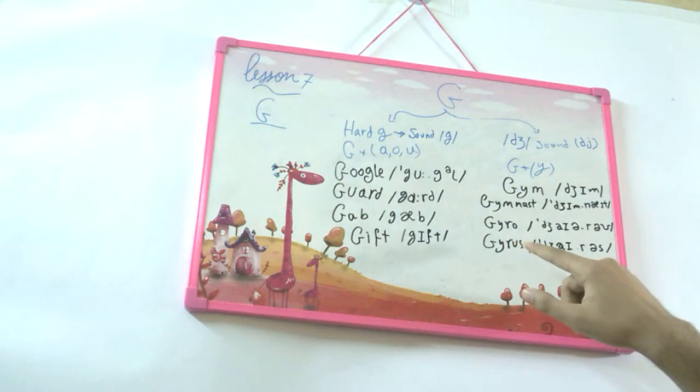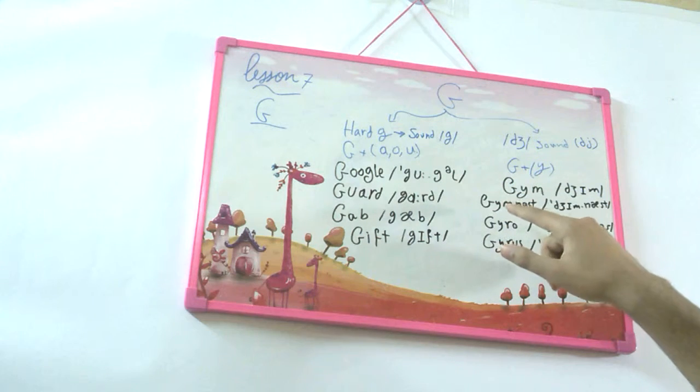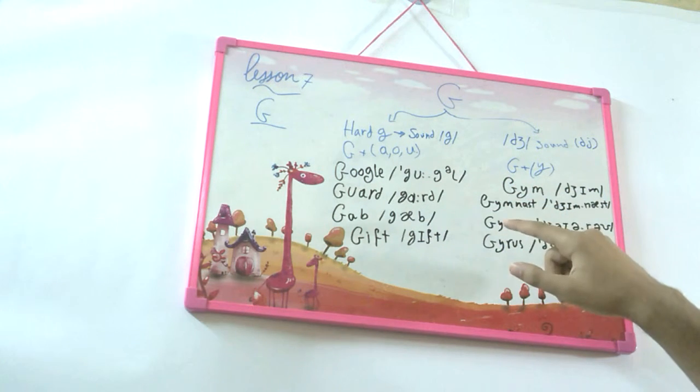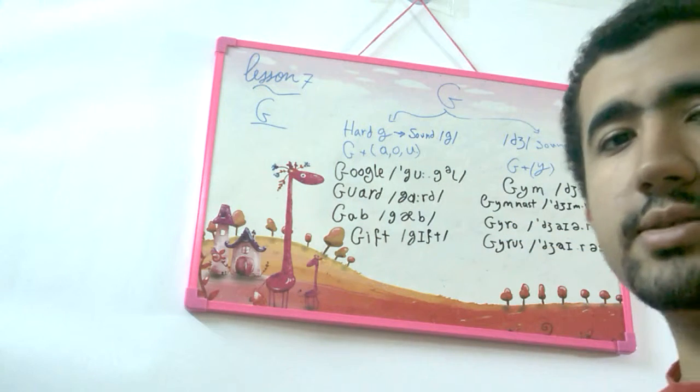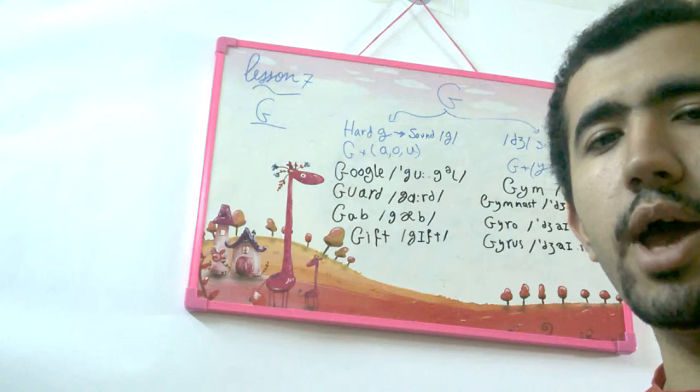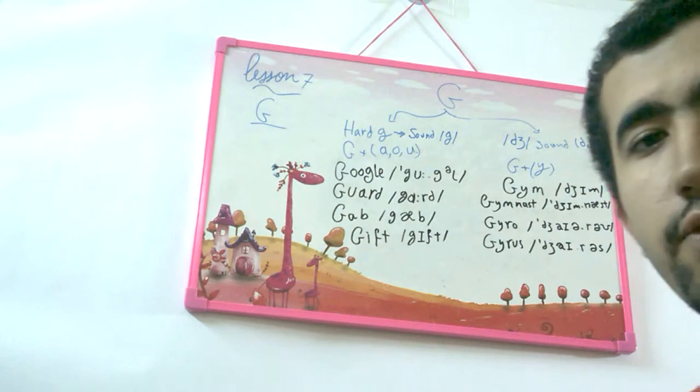Again: DJ, gym, gym nest, gyro, and gyrus. Remember to say the sound before the word to remember how you pronounce it. So what we have learned so far: we learned that the G letter has two pronunciations.